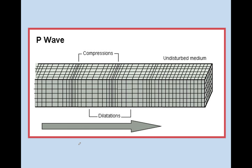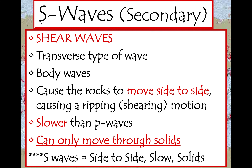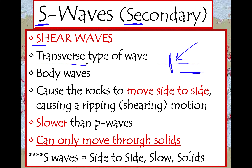Let's focus in on S waves. S waves are secondary waves — they get there after the P waves. They are shear waves, which means like a scissor: when you cut paper with scissors, you make the scissor cut through the paper at a right angle. That is a transverse type of wave — when a line goes through another line, it's called a transverse. They move through the earth, so they're called body waves. S waves make the rocks go side to side, causing a ripping or shearing motion. They are slower than P waves, and they can only move through solids. So S waves are: side to side, slow, and can only move through solids.